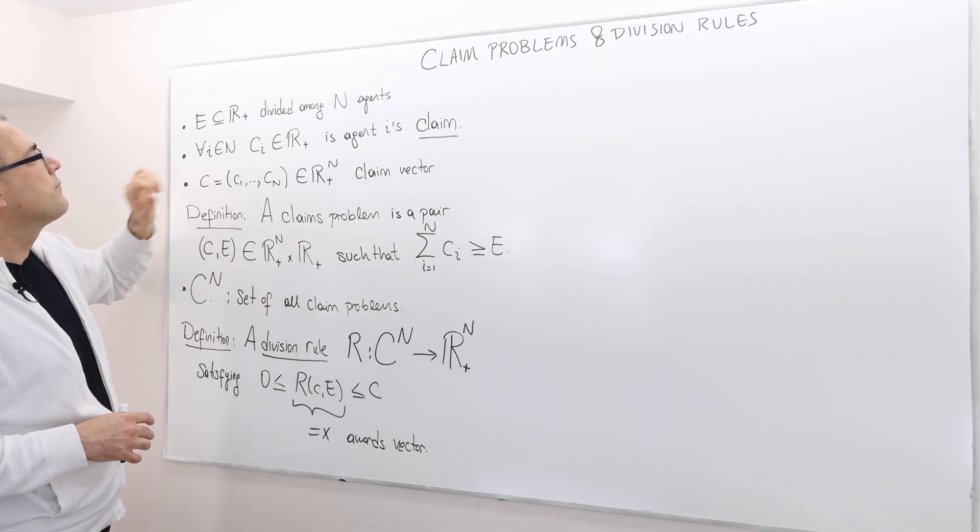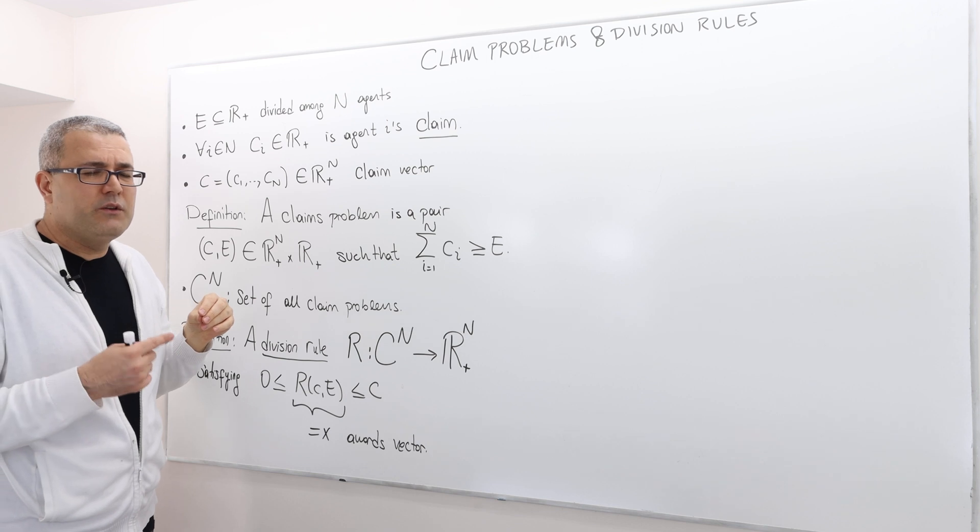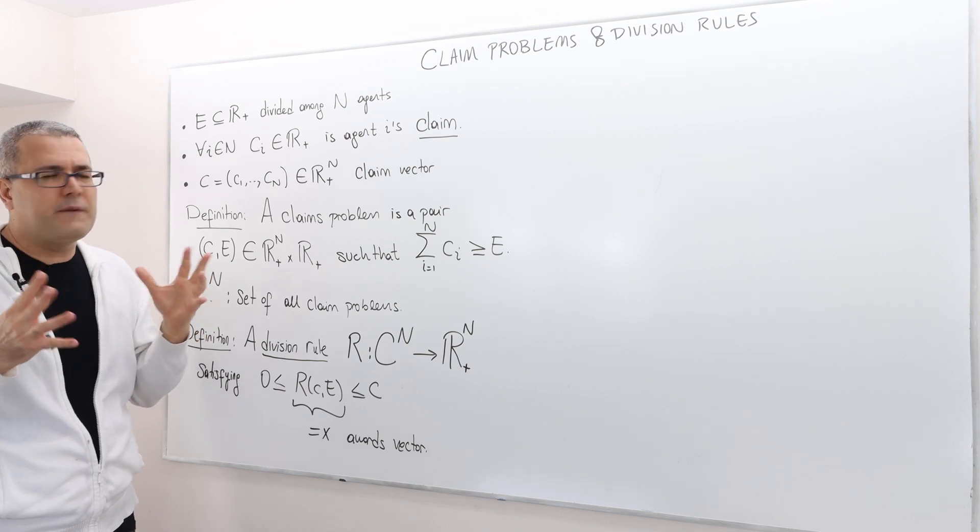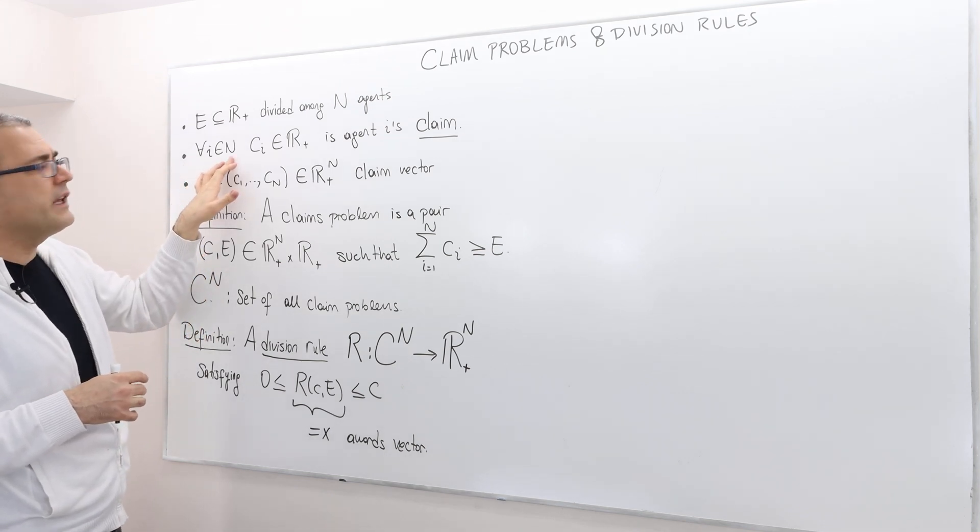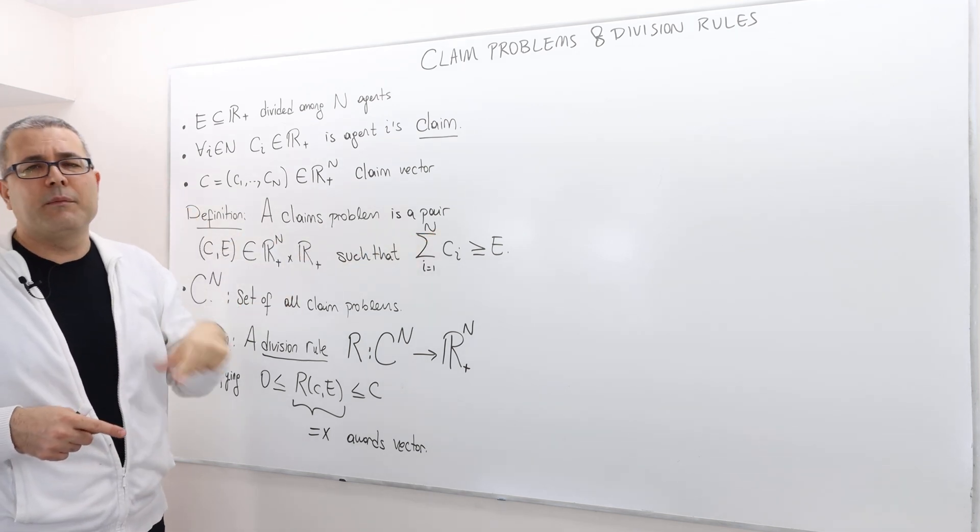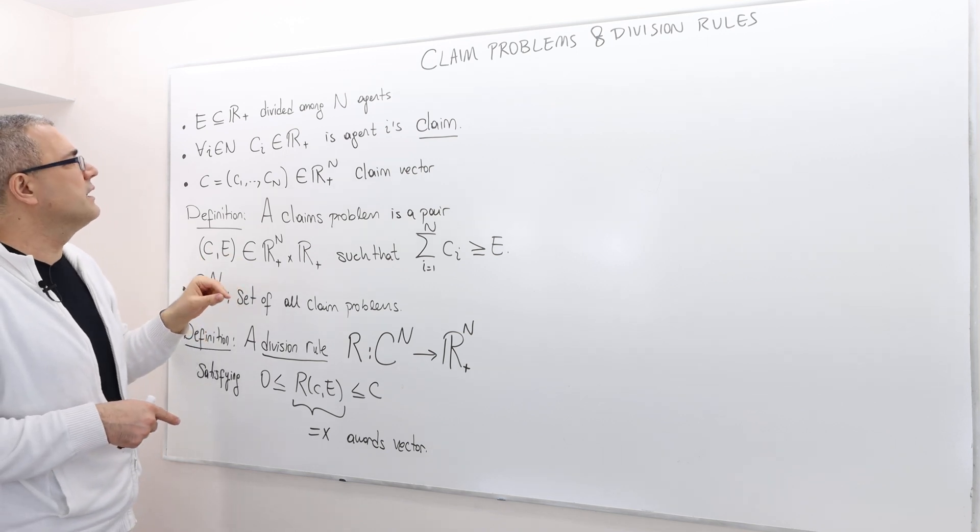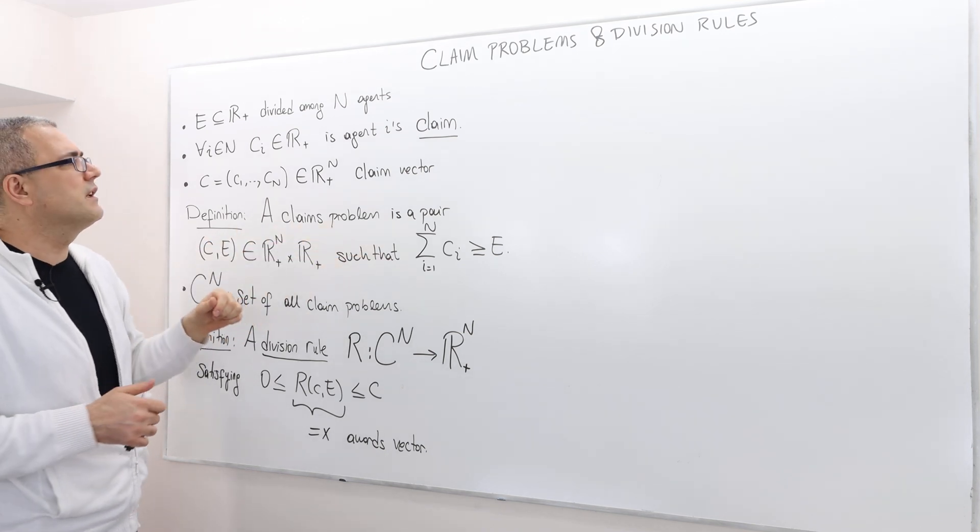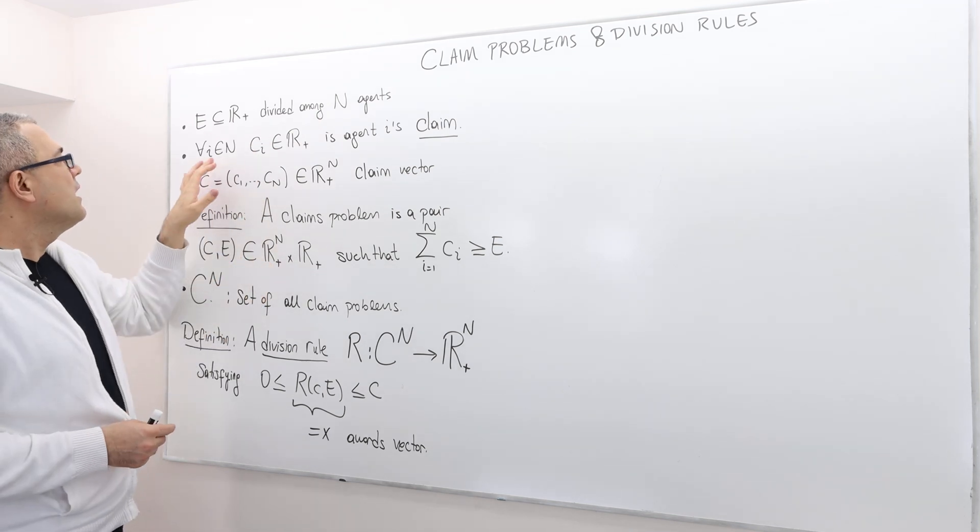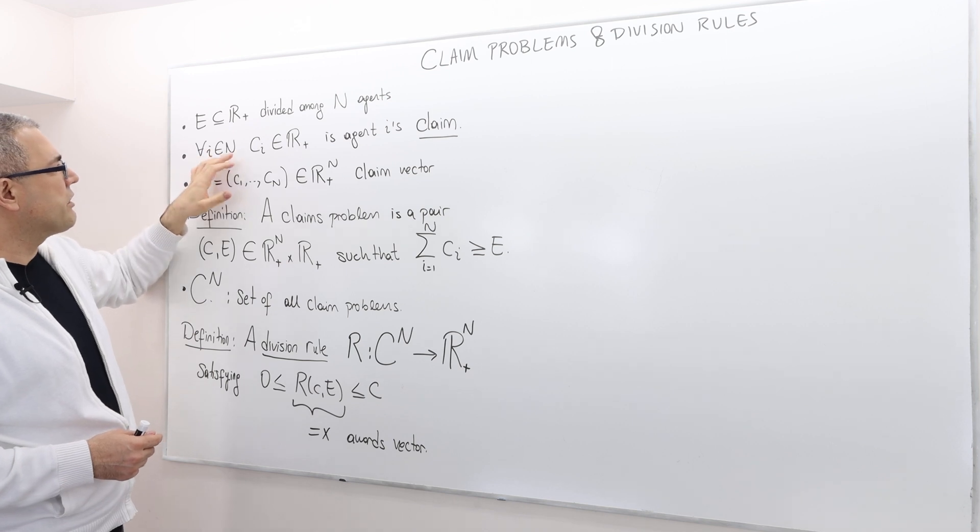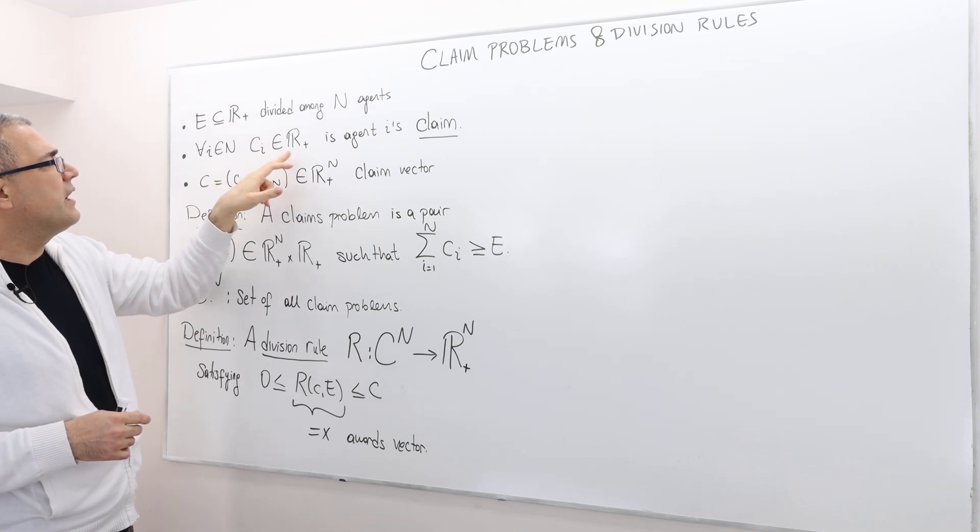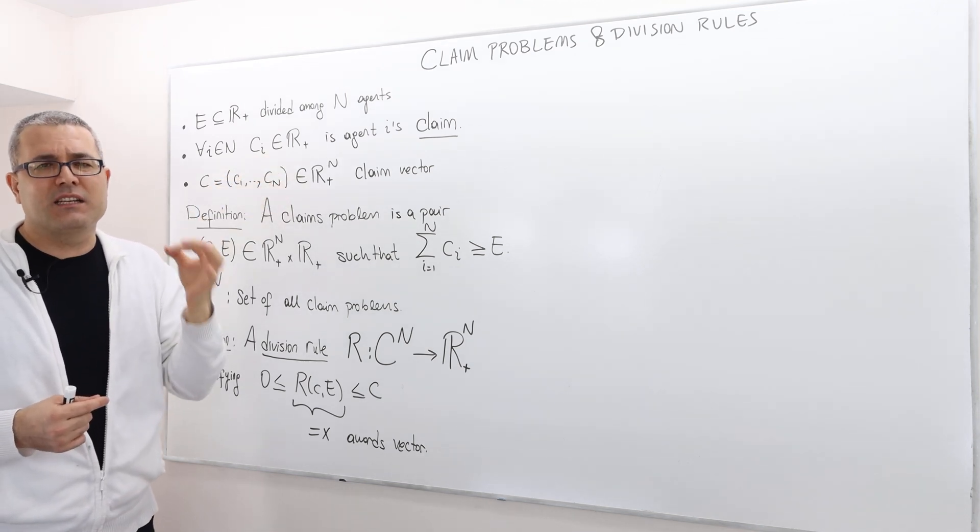For every agent, and by the way, the capital N, I will use the same notation for the set of agents and also the number of agents. So whenever I say for every I in N, here I'm using it as a set. Somewhere else, for example, here, I'm going to be using it as the number of players in that set or the number of agents in that set. The agents also be called as creditors. For every agent or creditor, CI, which is the claim of agent I, is a non-negative number.